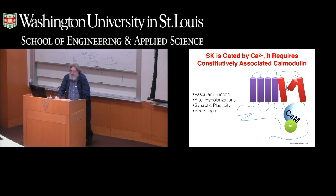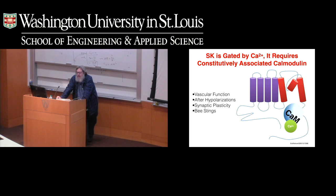There are two different types of calcium-activated potassium channels: the big ones and the small ones — BK and SK. There's also an IK, but it's really a fake SK. The SK channels are purely calcium-dependent. They're involved in a lot of physiology: vascular, blood pressure regulation. There are after-hyperpolarizations in a lot of neurons. There are also bee stings that, along with other things, target these channels. The bee venom protein apamine blocks SK channels.